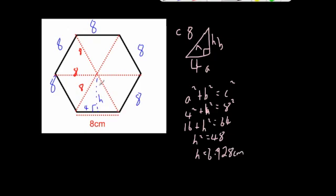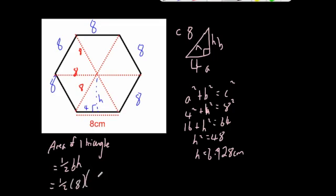So we've got the height of one of the triangles. So now we just need to find the area of one of the triangles. Area of one triangle equals half base times height. So that's equal to half the base, which is 8, times the height which is equal to 6.928.